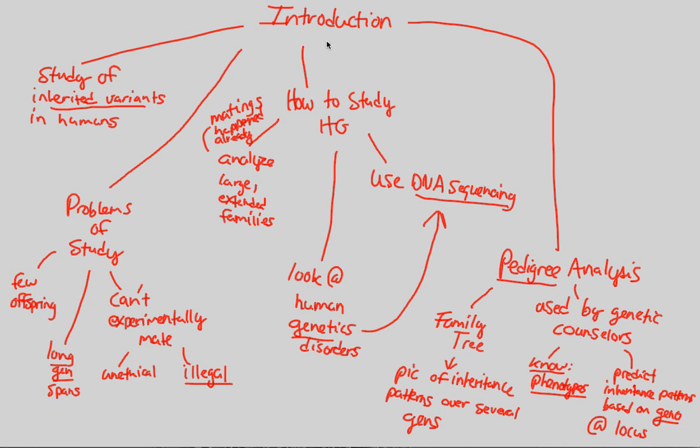So overall, in this introduction of human genetics, we have an understanding that this is a very complex study, mainly because we have these problems. But these problems can be dealt with through these steps in studying human genetics. Overall, in order to study human genetics, we're trying to figure out how this inherited variation within us as humans sort of plays out in nature.